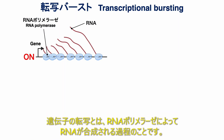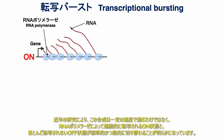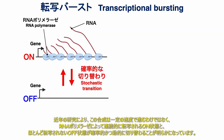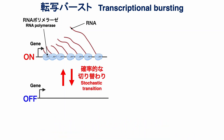Gene transcription refers to the process in which RNA is synthesized by RNA polymerase. Recent studies have shown that this synthesis does not proceed at a constant rate. Instead, there is an on-state, in which RNA is continuously synthesized by RNA polymerase, and an off-state, where hardly any synthesis occurs. These states switch probabilistically and dynamically.